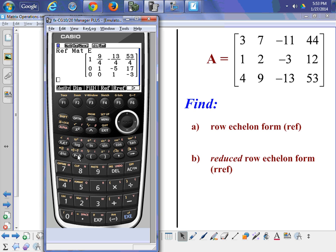Now you can see rref is right next to ref. So if we choose that and again choose matrix alpha E, hit enter, it gives us our reduced row echelon form - nice diagonal ones, zeros everywhere.